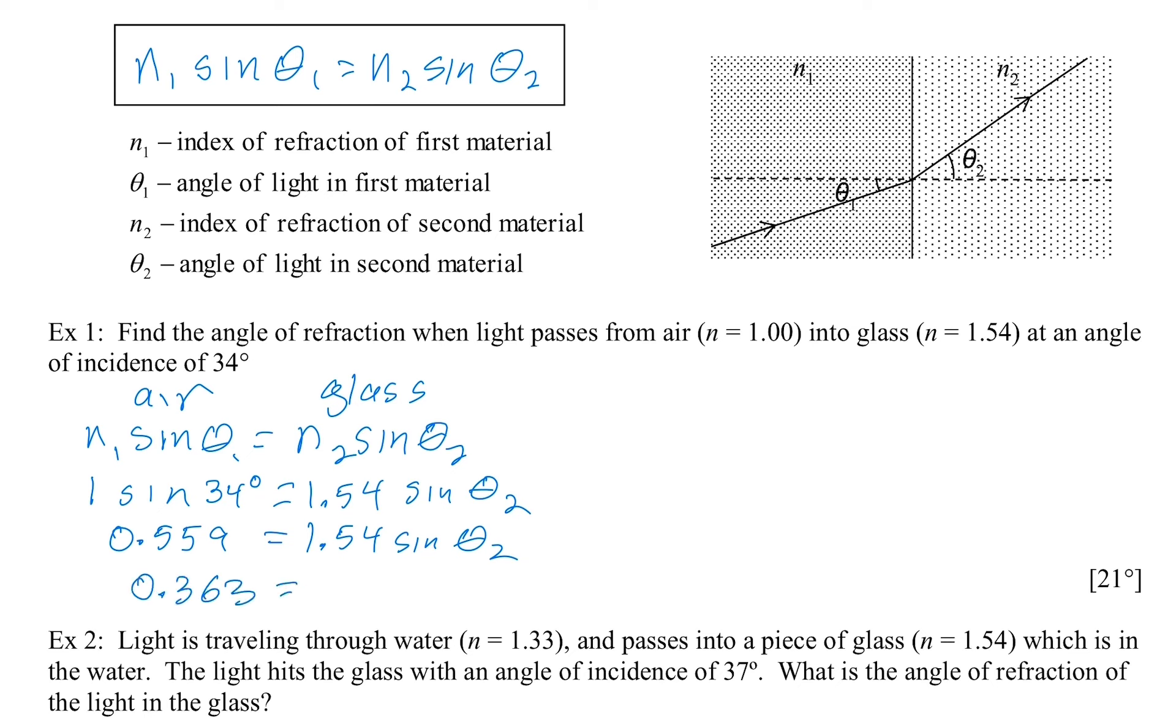And then I just have to do sine inverse to find out that the sine inverse of 0.363 is 21 degrees. And that's the answer I got. So that's good.